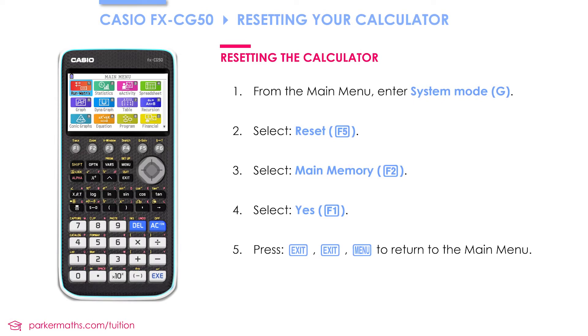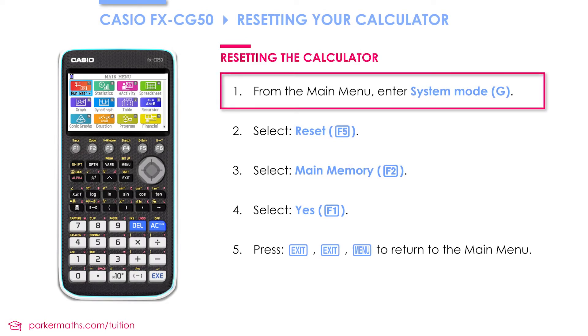From the main menu we need to enter system mode, which is G. To do that you can either press G or you can use the directional arrows.